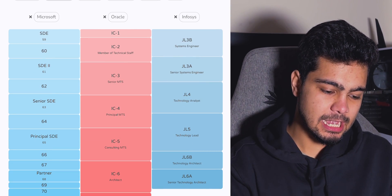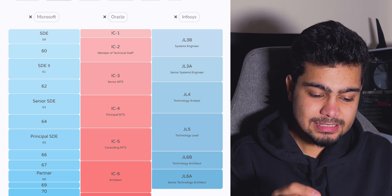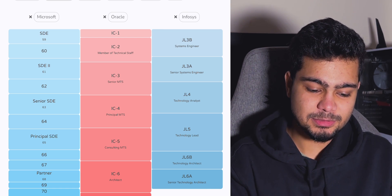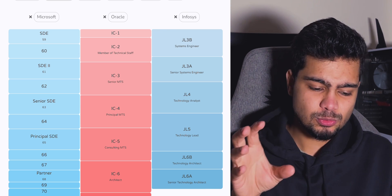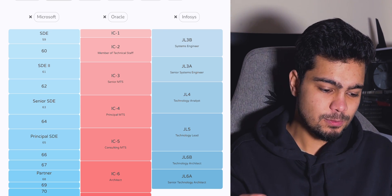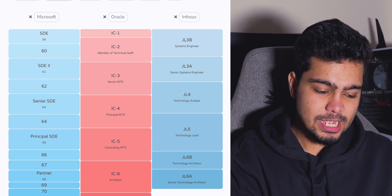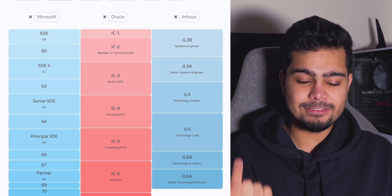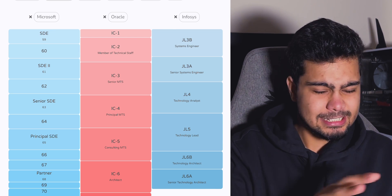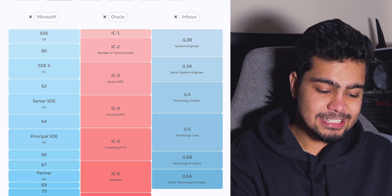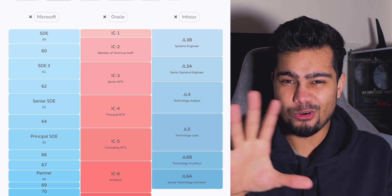For example, Infosys entry-level is a systems engineer, which is SG-1. Similarly, Oracle entry-level is IC1, and Microsoft entry-level is level 59. If you look at level 59 and 60, that maps to the SG-1 category — systems engineer. And IC2 or member of technical staff (MTS) is equivalent to SG-2.